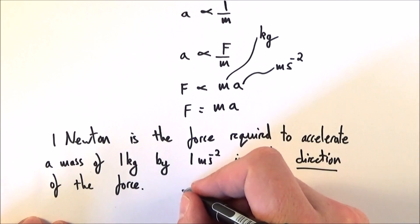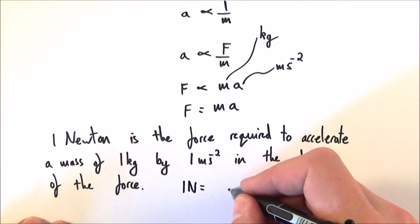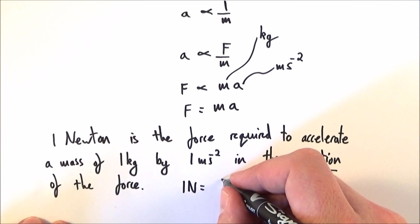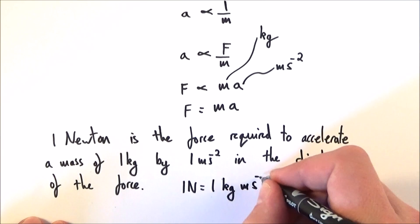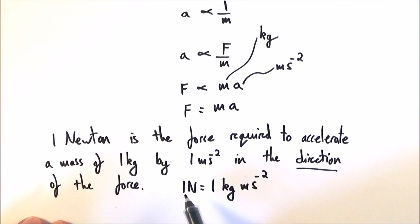What that means then is that the one newton can also be written as basically one kilogram meter second to the minus two. And here we have our derived unit and the base units.